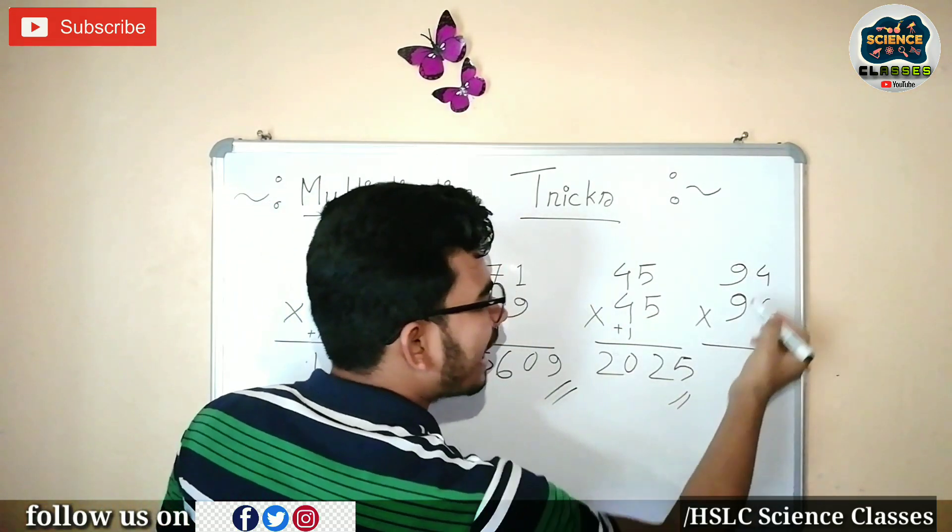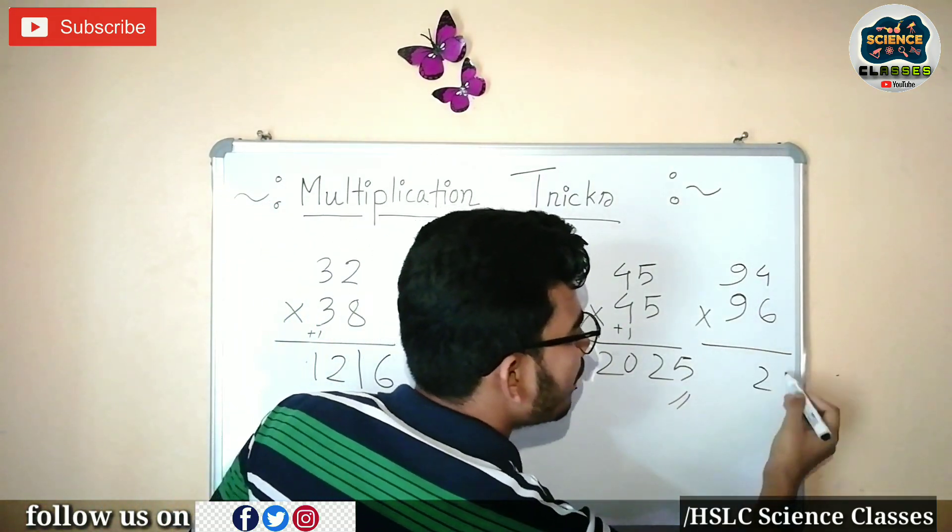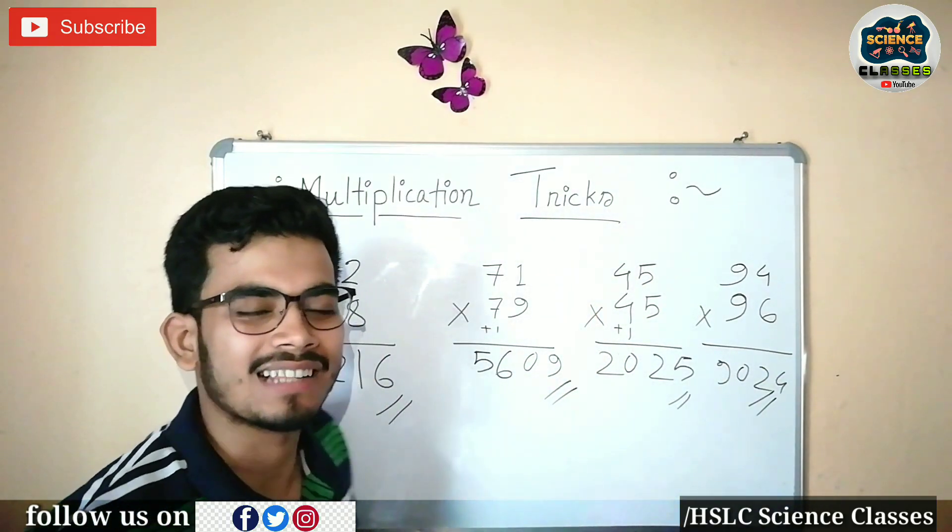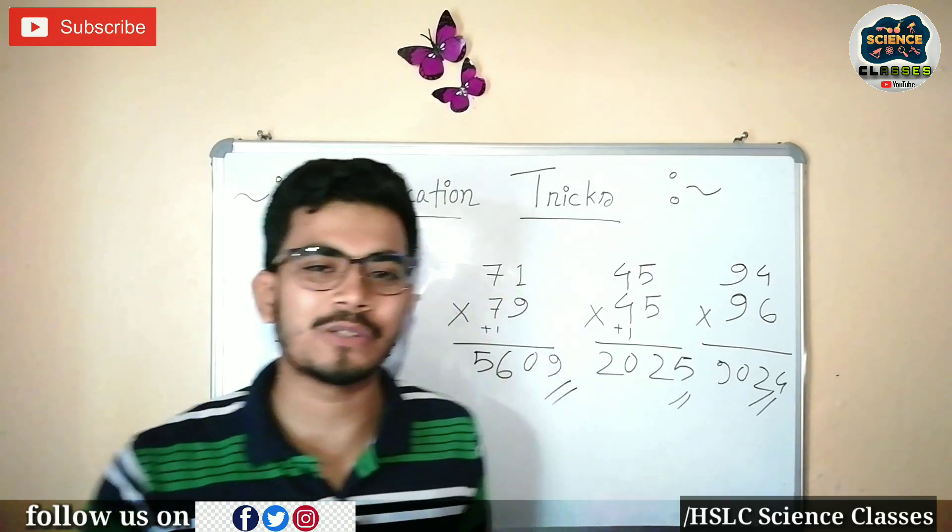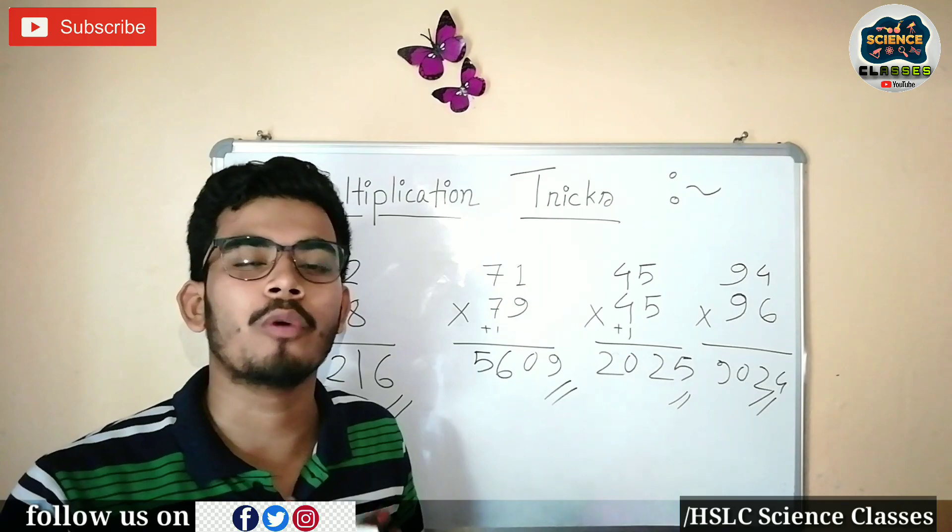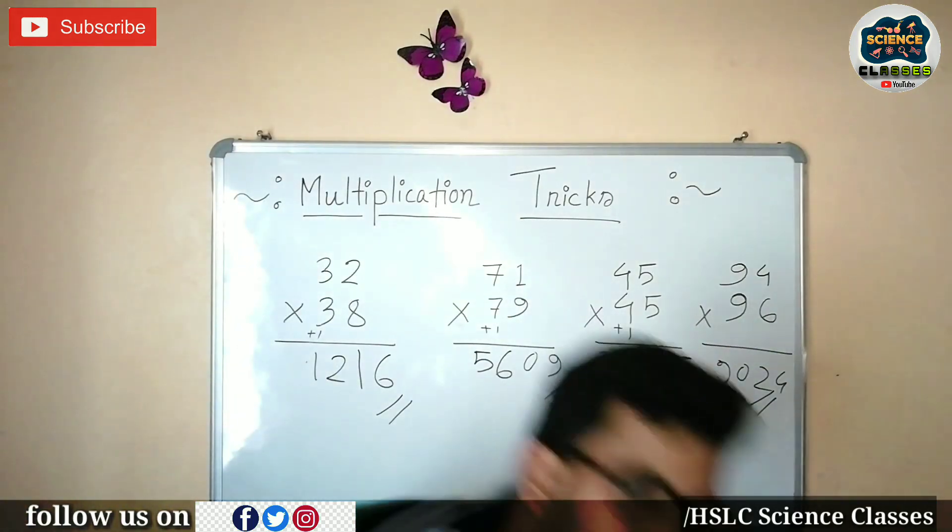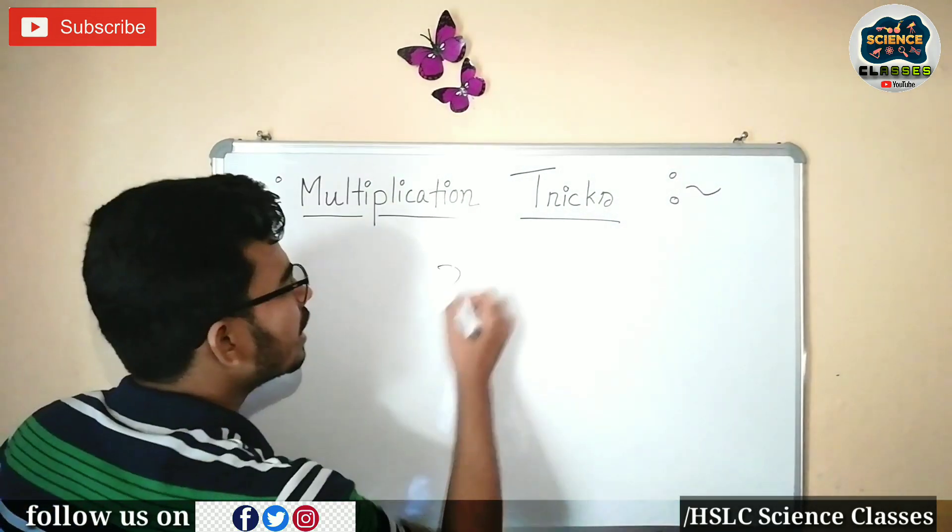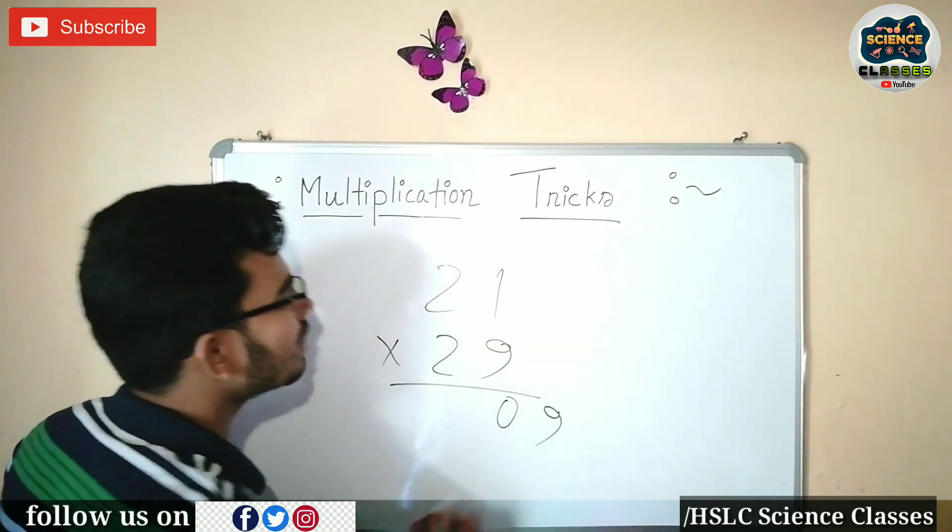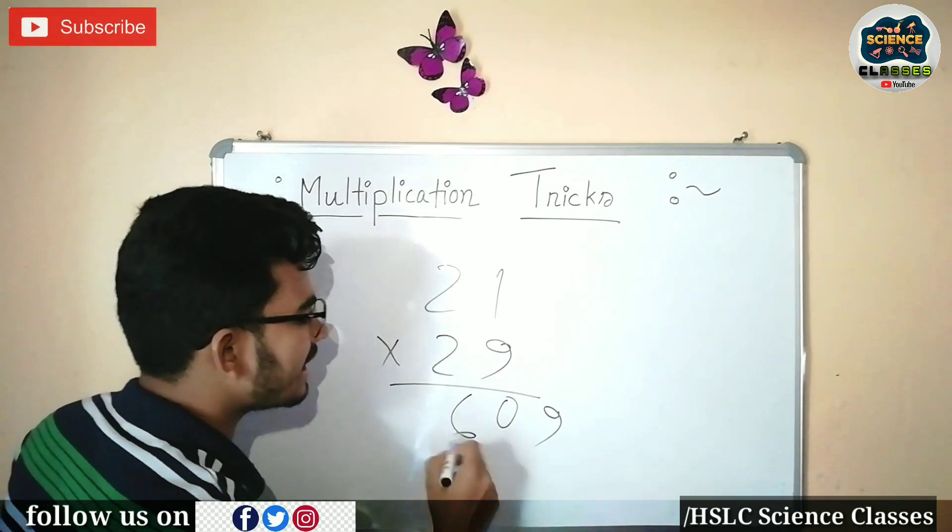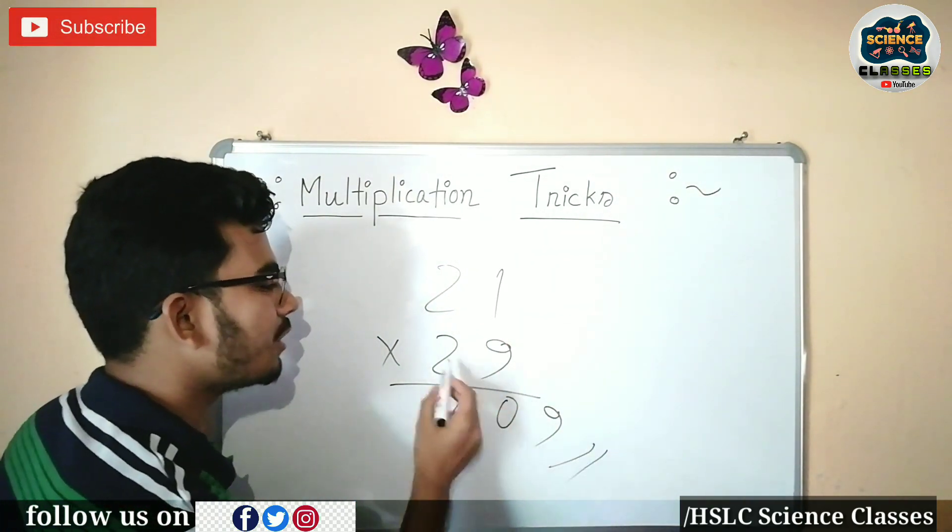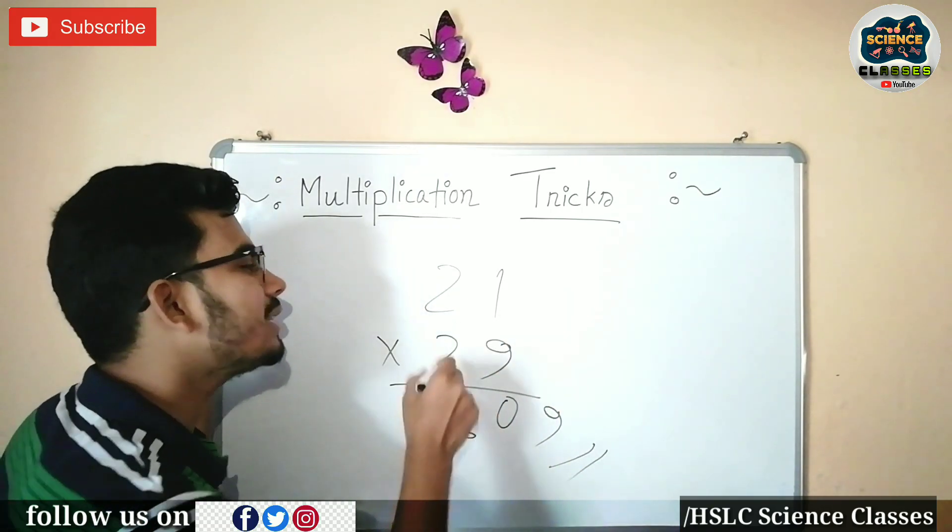Next problem: 94 times 96. 9 times 4, then it will be a very simple trick. This is the simple trick that we use in our common exam. It will be done by 94 times 96. So the answer is 9024.